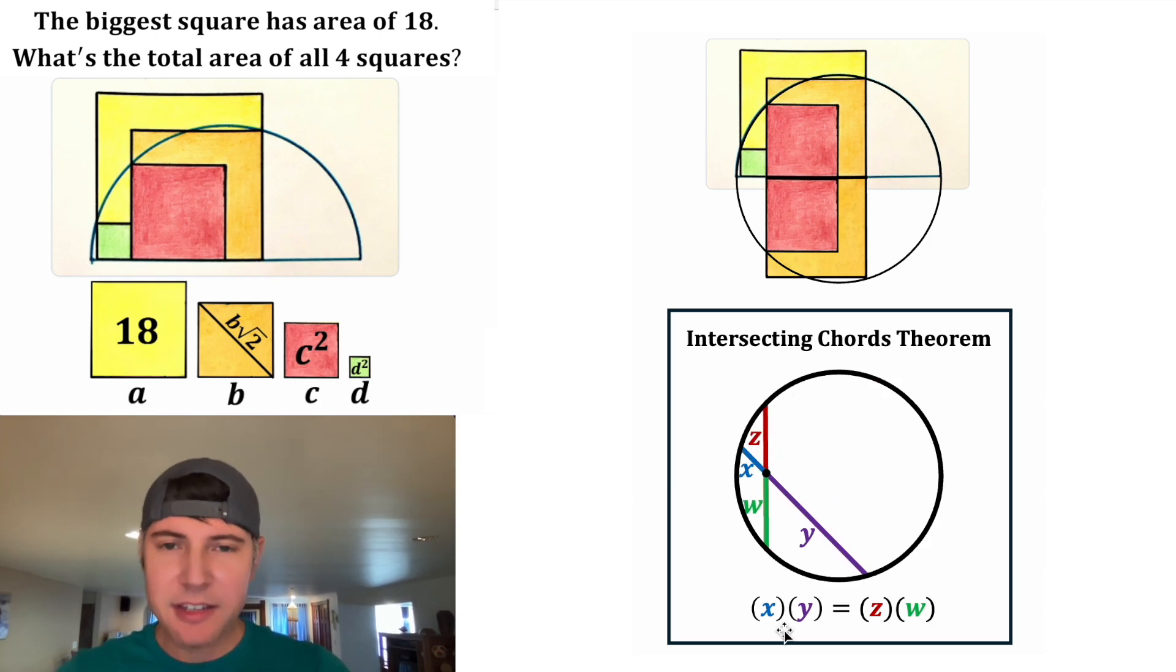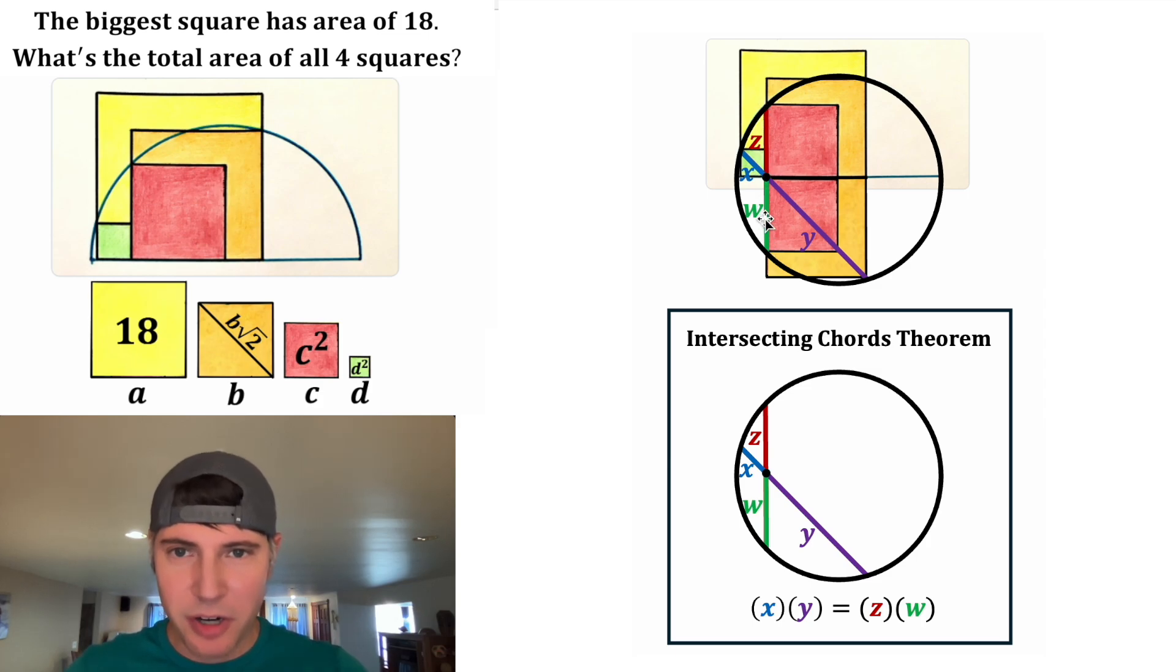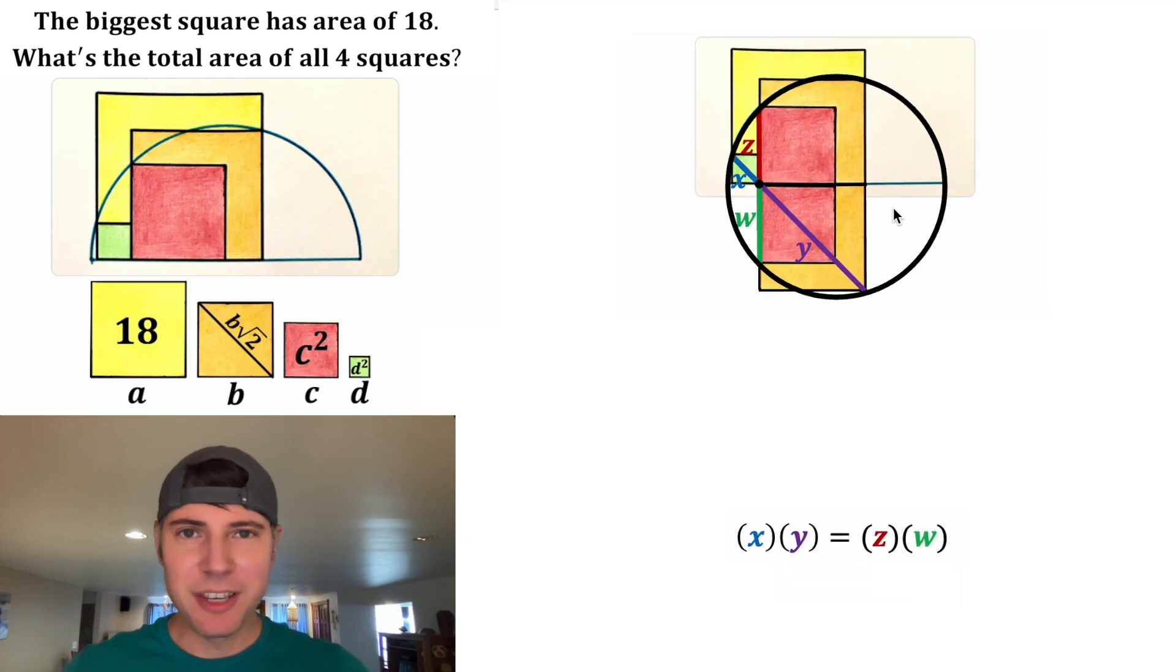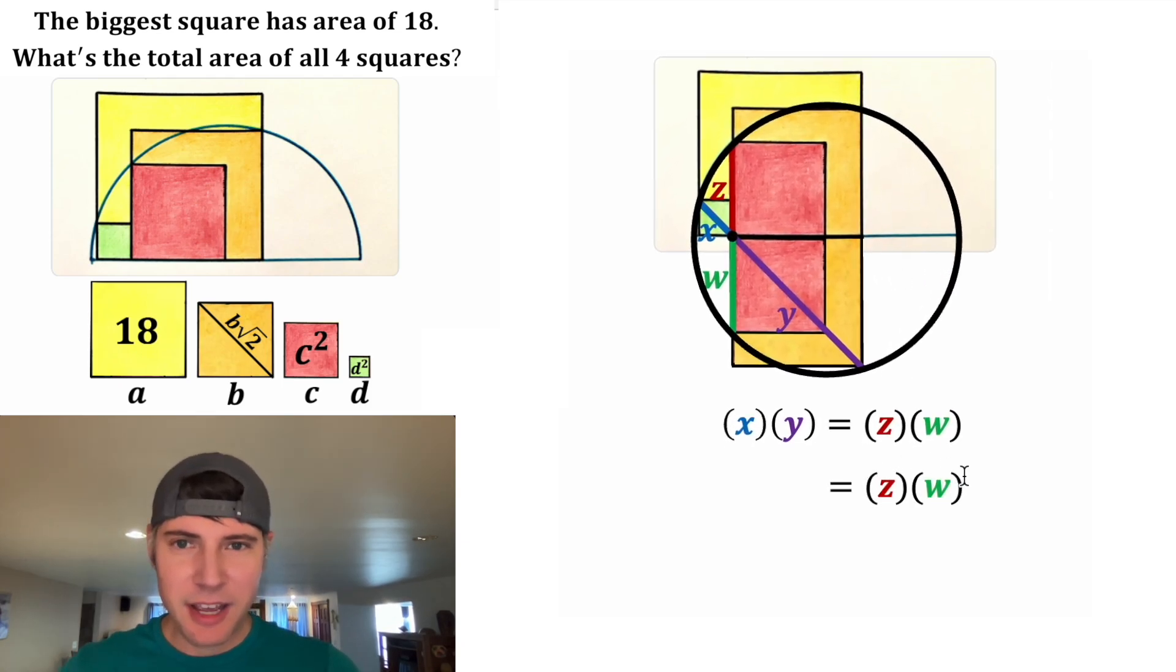And if we line them up just like this, that'll match with this up here. This chord lines up with the sides of the squares and this chord lines up with the diagonals of the squares. So we can figure out what this would be. So first, let's do the Z and the W. The Z is a side of a red square and that's going to be equal to C. So we'll change this Z into a C. And then the W is also a side of the red square. So we can change this W into C.